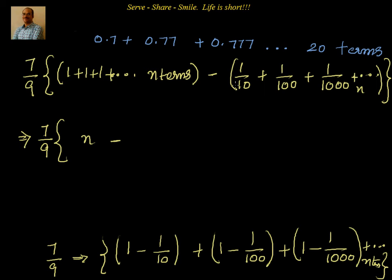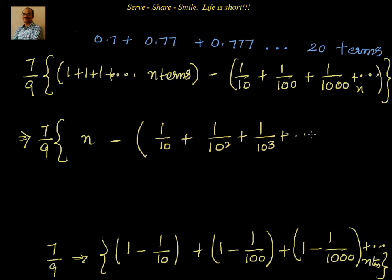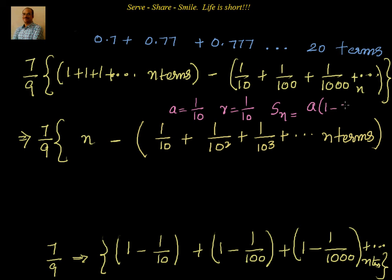Let's confirm it is a geometric progression: 1/10 + 1/10² + 1/10³ + ... up to n terms. Here a = 1/10 and r = 1/10. The formula for S_n when r < 1 is S_n = a(1 − r^n) / (1 − r). Since r = 0.1, which is less than 1, we apply this formula.